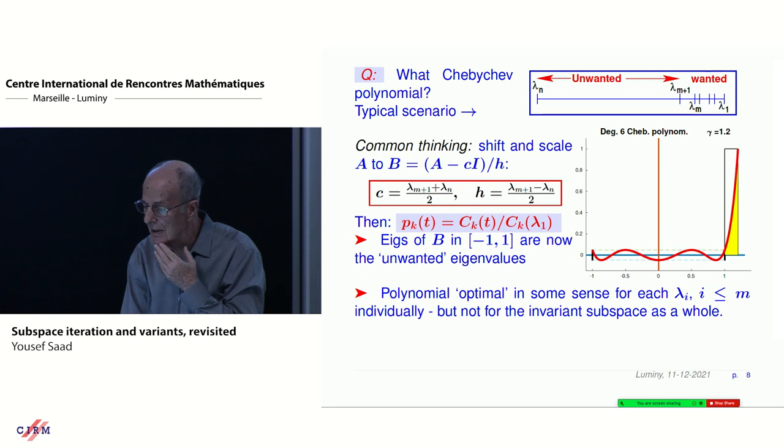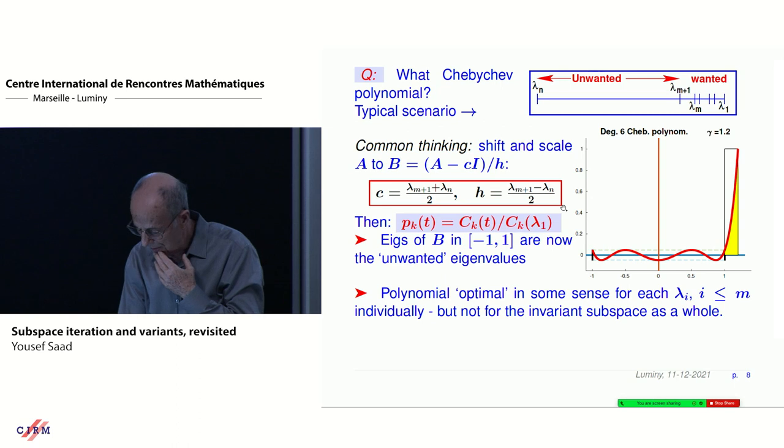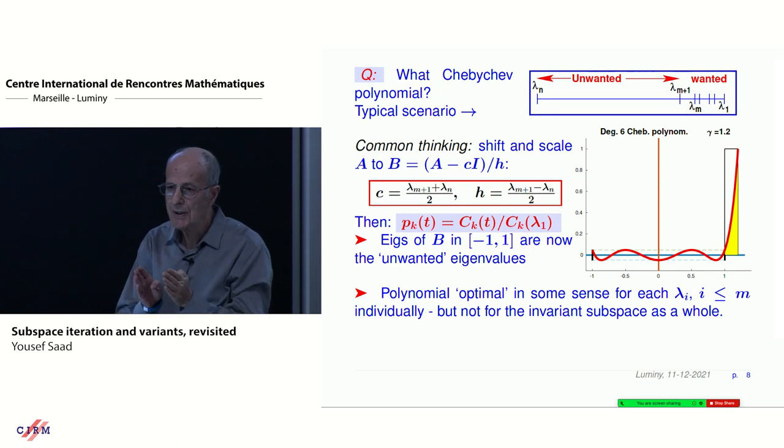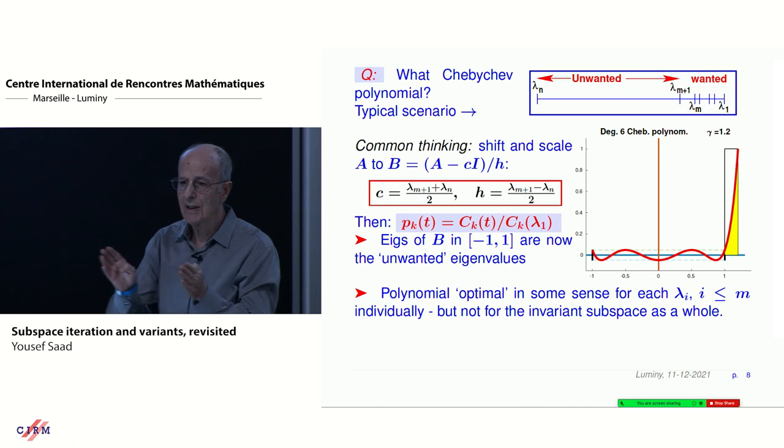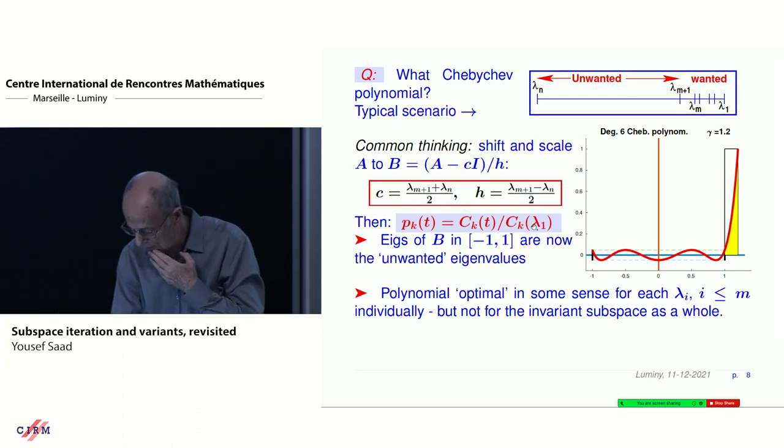That turns out to be not quite optimal if you think in terms of subspaces. It's optimal if you think of one single particular eigenvalue. When you think in terms of subspaces, I will show later some experiments, it's not quite the best you can do. This is what was implemented in those days. The whole thing is to select the K, a degree that's not too high, because otherwise you get linear dependence.